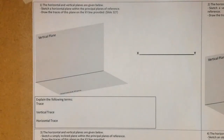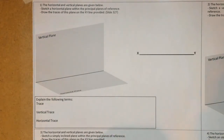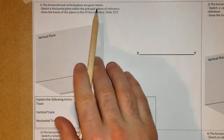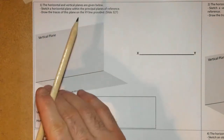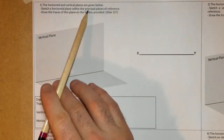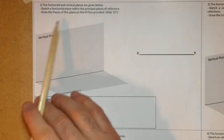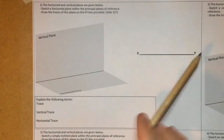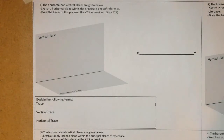Today we're doing a little bit on the oblique plane. It's an introductory exercise on page 103 in your books, sheet 3 on the oblique plane. Starting off on planes, the question says the horizontal and vertical planes are given below — sketch a horizontal plane within the principal planes of reference and draw the traces of this plane on the XY line provided.